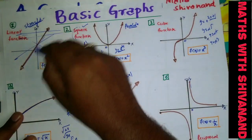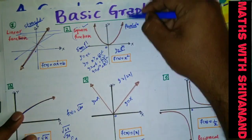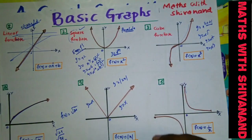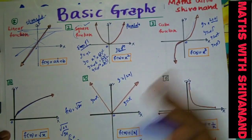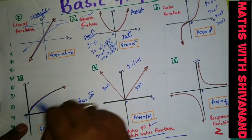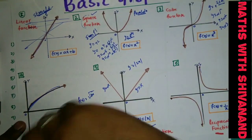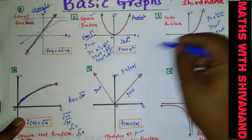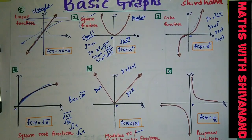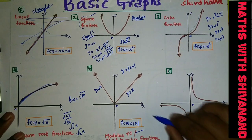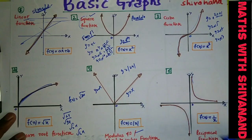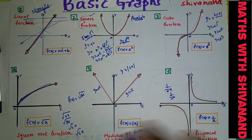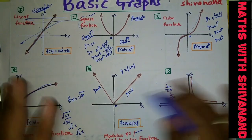So to recap: a straight line is the linear function; the parabolic shape is the square function; the s-curve is the cube function; the rocket-shaped curve is the square root function; the V-shape is the modulus function; and the reciprocal function has two loops. Functions like 1/(2x), 1/(3x), or 1/(5x) are all of the same shape.